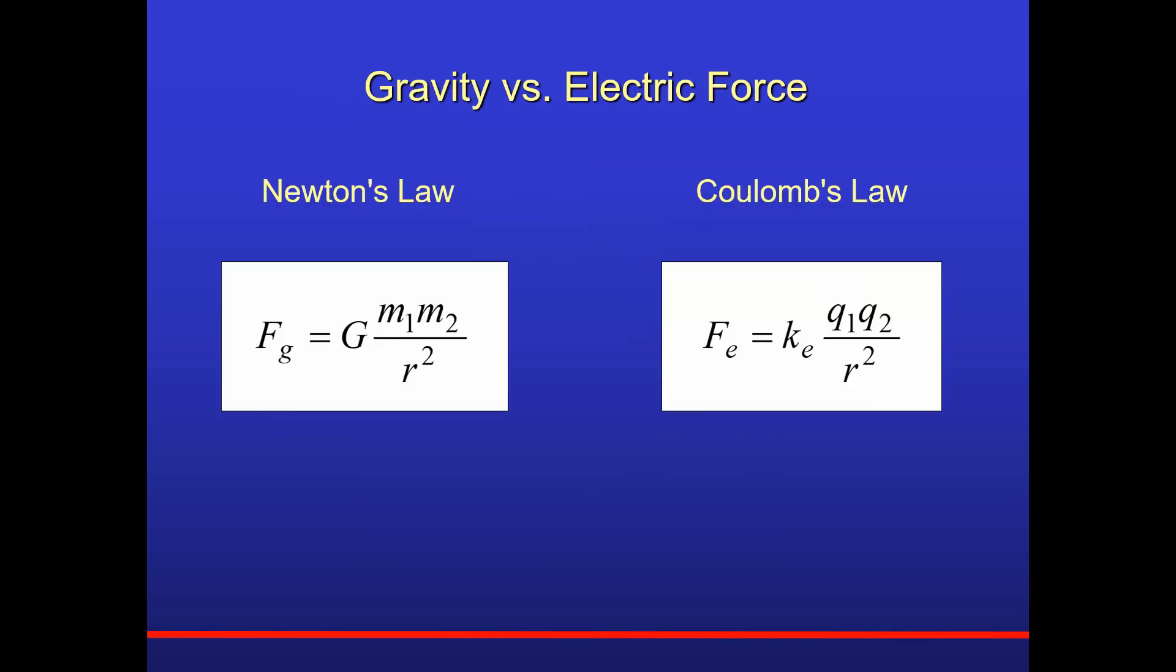Before we continue with some examples of calculating the electric force, I want to compare Newton's law of gravity with Coulomb's law of electric force. The two formulas look very similar. The gravitational force, F sub g, is equal to a constant, capital G. You have two masses, m1, m2, divided by the separation r squared.